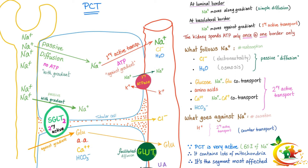Here's your proximal convoluted tubule cell and peritubular capillary — we're going to spend energy on sodium only. Sodium is plentiful in the tubular fluid, so it can move from the tubular lumen into the tubular cell by passive diffusion down the concentration gradient. But for sodium to move from the tubular cell to the peritubular capillary against the concentration gradient, we need to spend energy — this is called primary active transport.